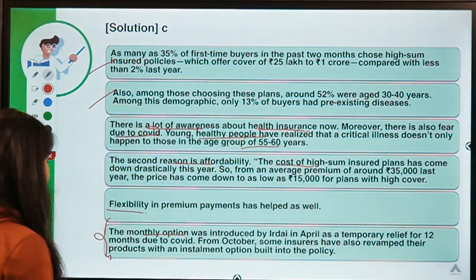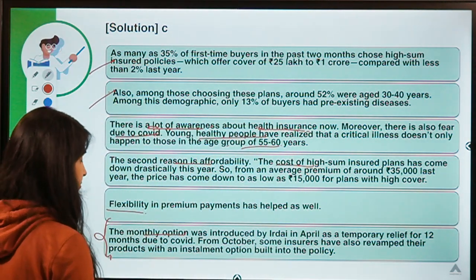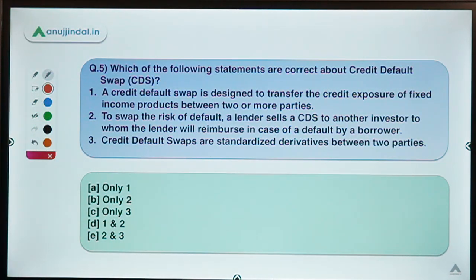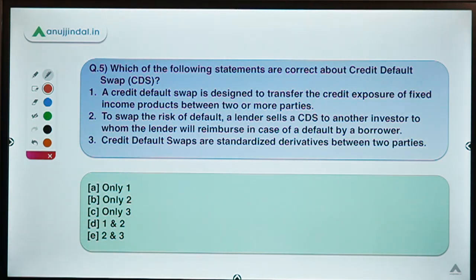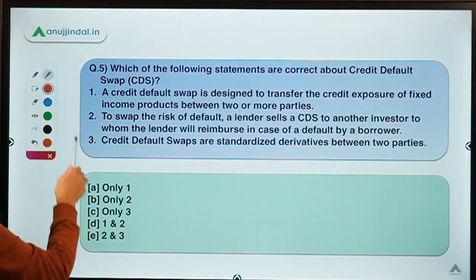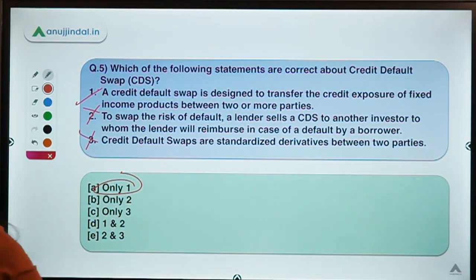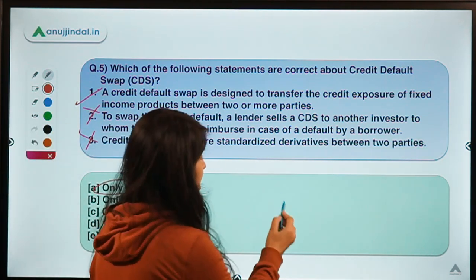Moving ahead to the last question for today: which of the following statements are correct about credit default swaps, basically a type of derivative? The correct option is option A, which means only statement 1 is correct and the other two are not.